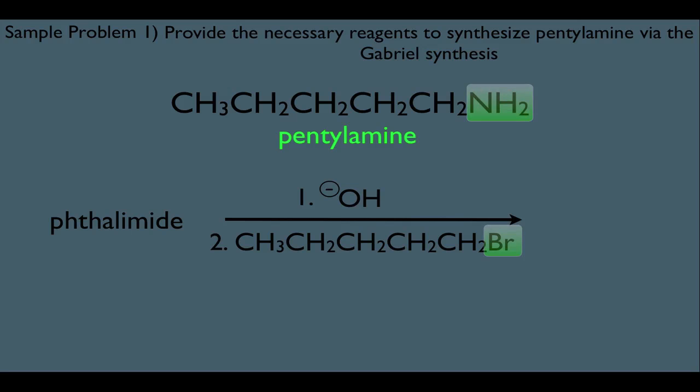And then we just add the other necessary reagents to finish this thing off. What comes next is the acid-catalyzed hydrolysis, and then the OH- taking off the extra proton of the amine. So this is how we would pull off the synthesis of pentylamine via Gabriel synthesis.